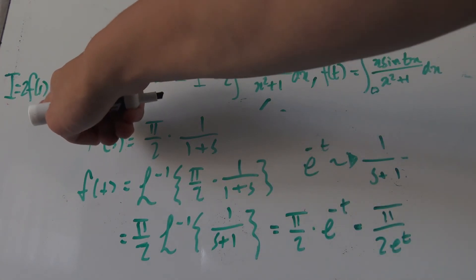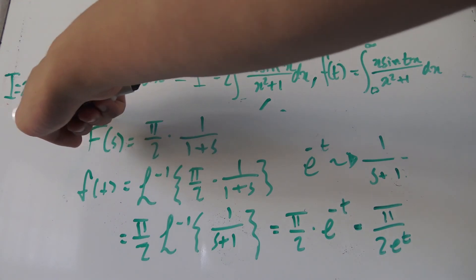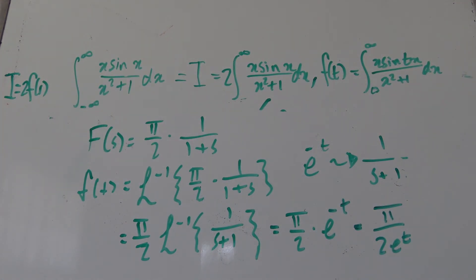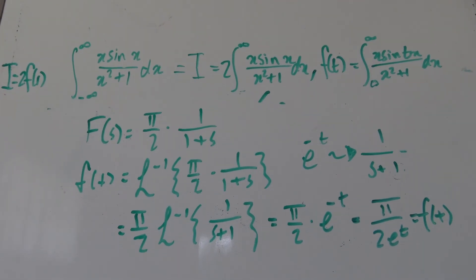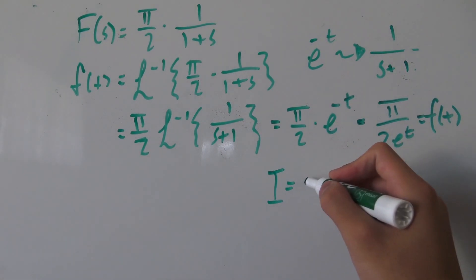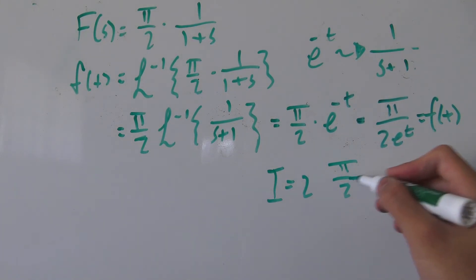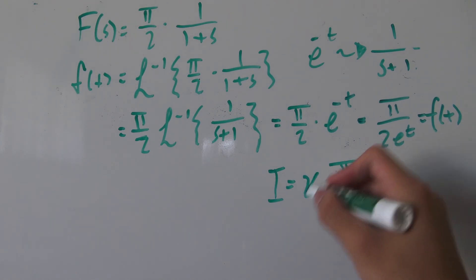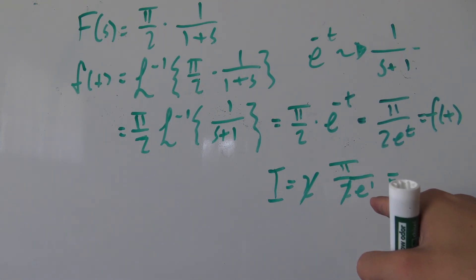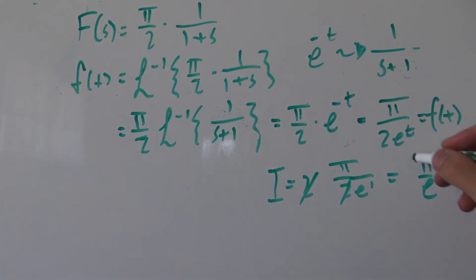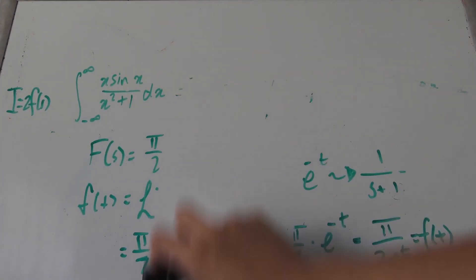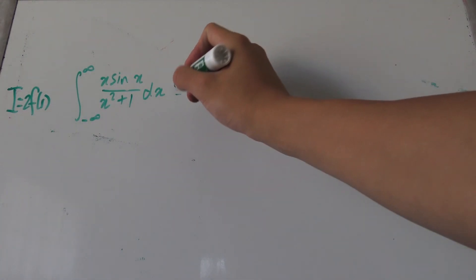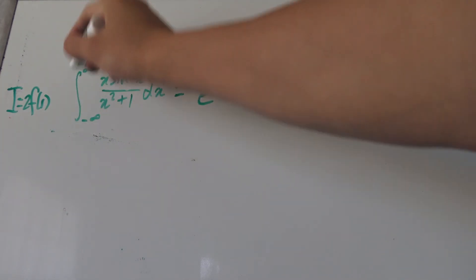Recalling that our original I equals 2 times f evaluated at 1: plugging t equals 1 into f of t gives pi over 2 times e to the minus 1, then multiplying by 2 gives I equals 2 times pi over 2 times e to the minus 1. The 2's cancel, and e to the minus 1 is 1 over e, so our final answer is I equals pi over e.